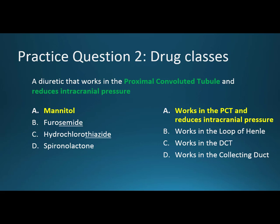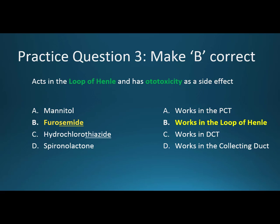If we have something working in the loop of Henle, we'd be talking about furosemide. Because it's closer to the glomerulus, we're really going to see more diuresis. Someone with a more severe condition like CHF would probably be on furosemide versus somebody with a less severe condition like hypertension. Also, loop diuretics are infamous for ototoxicity, so we always want to be careful watching for gentamicin or other drugs that also have ototoxicity as a side effect.